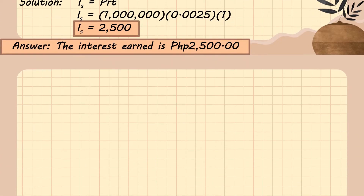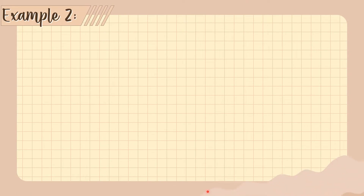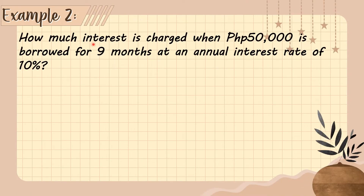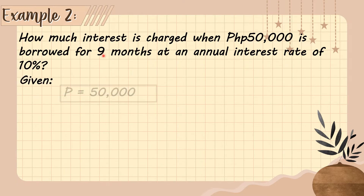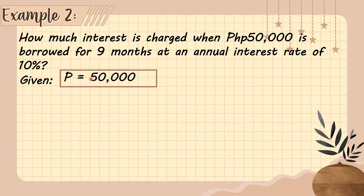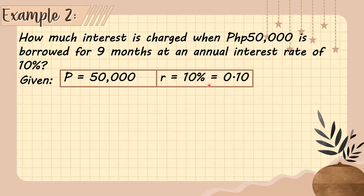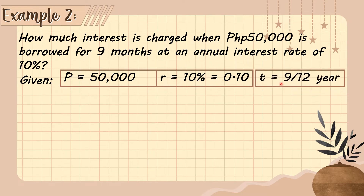Example number two: How much interest is charged when 50,000 pesos is borrowed for nine months at an annual interest rate of 10 percent? The given: principal is 50,000 pesos, the rate is 10% or 0.10 in decimal form, and the time is nine months, which is 9 over 12 of a year.